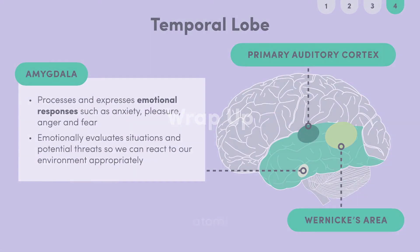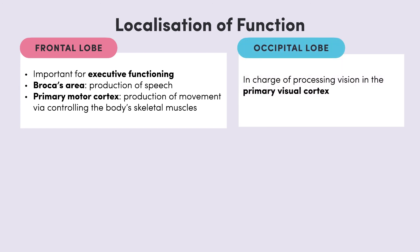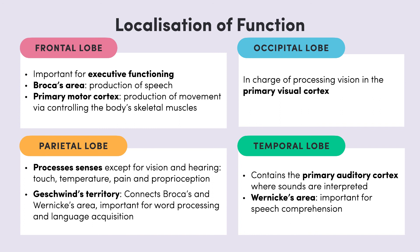Let's wrap up. Today we learned about the localisation of function in the cerebral cortex. The frontal lobe is important for executive functioning, as well as the production of speech via Broca's area and movement via the primary motor cortex. The occipital lobe is in charge of processing vision in the primary visual cortex. The parietal lobe is the site where senses — except vision and hearing — are processed, including touch, temperature, pain and proprioception. Finally, the temporal lobe contains the primary auditory cortex where sounds are interpreted, as well as Wernicke's area for speech comprehension. Gershwin's territory connects both Broca's and Wernicke's areas and is important for word processing and language acquisition.